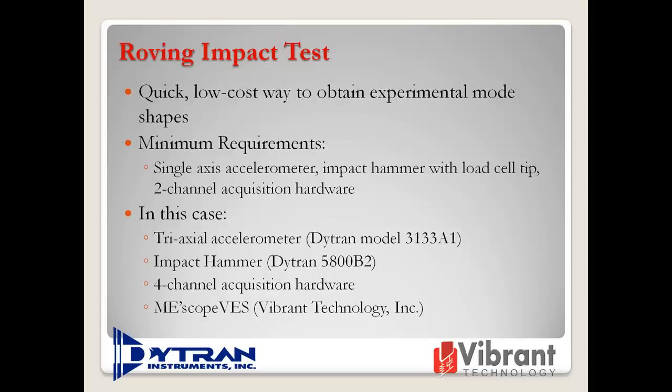Roving impact tests, as shown in this video, involve attaching a fixed reference accelerometer to an active vibration point and roving the hammer to impact the structure at an unlimited number of points and directions.